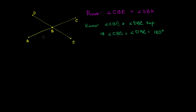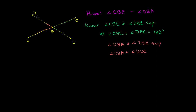We also know that angle DBA and angle DBC are supplementary. This angle and this angle are supplementary — their outer sides form a straight angle and they are adjacent — which tells us that angle DBA plus angle DBC is going to be equal to 180 degrees.